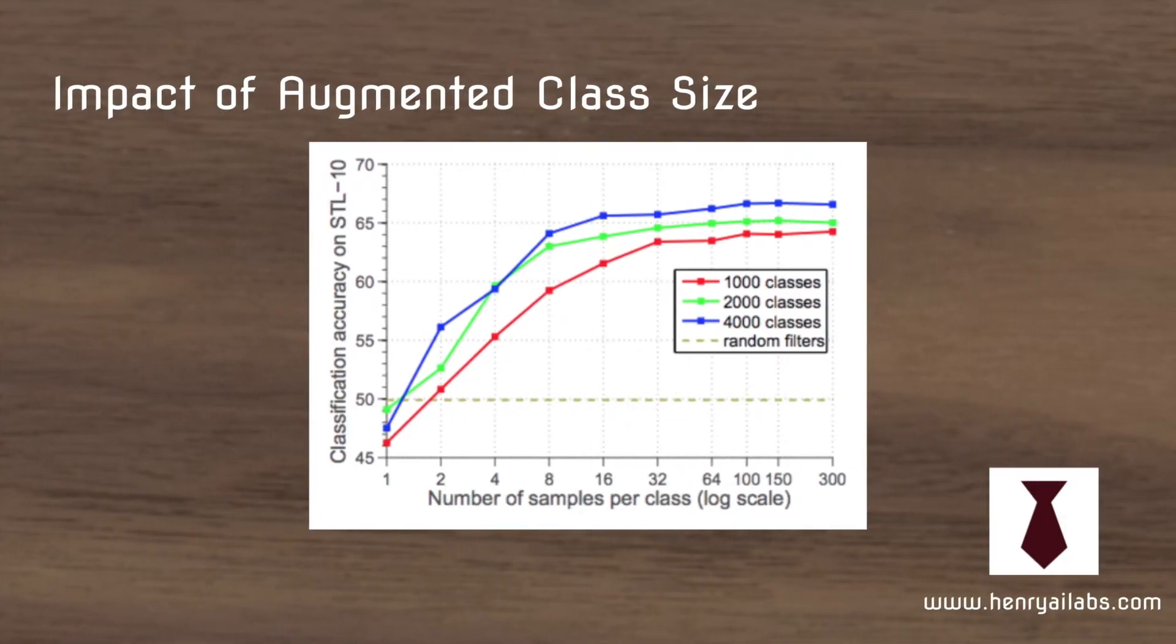So then this also shows another interesting consideration: how big should the augmented classes be? So this plot shows that the performance levels off at around 16, maybe higher, with respect to constructing 4,000 classes.